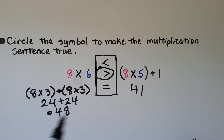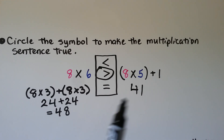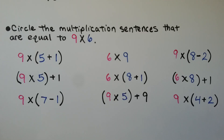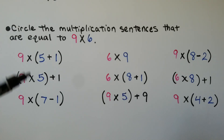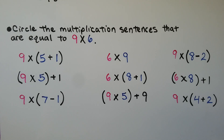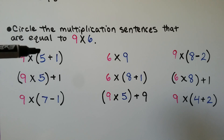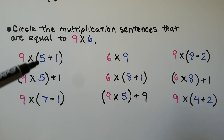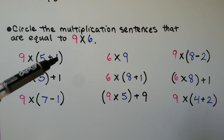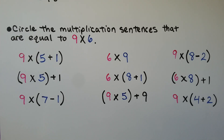We found out what each side was equal to so that we could compare the products to know the correct answer. We need to circle the multiplication sentences that are equal to nine times six. We could try solving each one to see what it equals. Here we have nine times (five plus one). If we add the five plus one, that's a six — we would have nine times six. So yes, that's another way of writing nine times six, and we can circle that one.